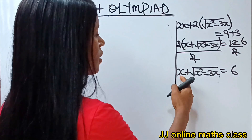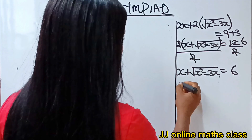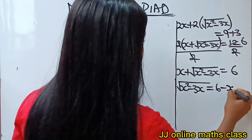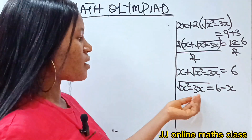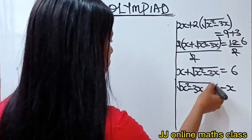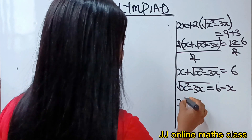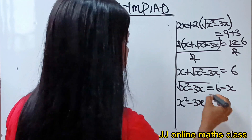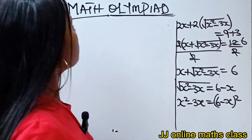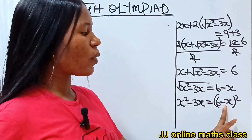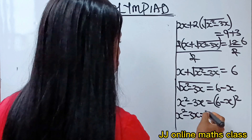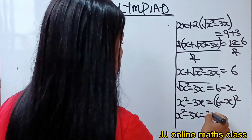Transferring x to the other side, we get: √(x² − 3x) = 6 − x. Now squaring both sides, the square cancels the square root on the left, giving x² − 3x = (6 − x)². Expanding the right side using the algebraic identity: (6 − x)² = 36 − 12x + x².